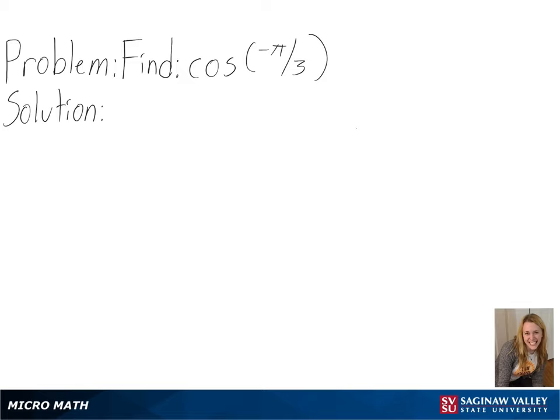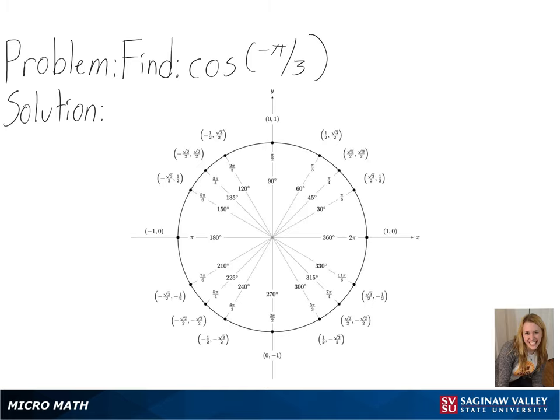Our problem is to find cosine of negative pi over 3. To solve this, we will be using a unit circle.